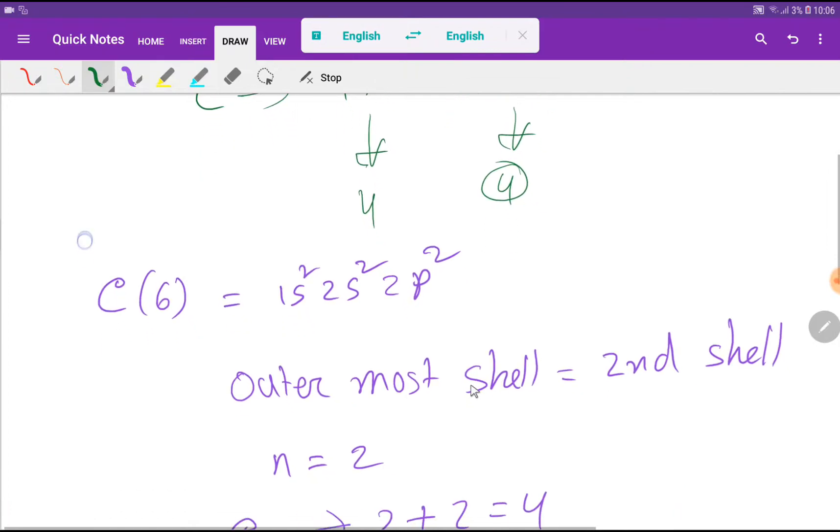We have another way to find out the dots for carbon. We know that the atomic number of carbon is six. So if you do the electronic configuration, then you will get this. Look at here, at first we have to find out the valency shell. Valency shell is the outermost shell. So here, second shell is the outermost shell or valency shell.